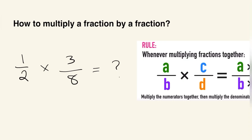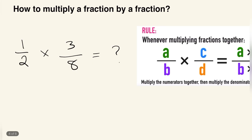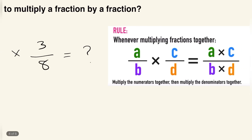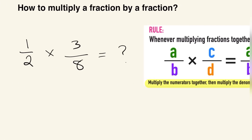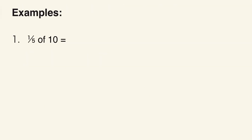Now, how to multiply a fraction by a fraction — this is a little more involved but uses the same strategy. Since we already have fractions, we don't need to put anything over one. The rule is: whenever multiplying fractions together, multiply the numerators and then multiply the denominators together. So for one half times three over eight, we multiply across to get three over sixteen. This doesn't reduce, so it stays three sixteenths.